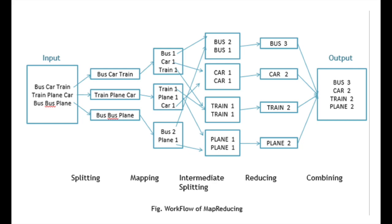The next step is to count total buses, total cars, total planes in a single box. Box 1 shows bus 2 and bus 1; box 2 shows car 1 and car 1; box 3 shows train 1 and train 1; box 4 shows plane 1 and plane 1. Counting all: first phase has 3 buses, second phase 2 cars, third phase 2 trains, and fourth phase 2 planes. The output is 3 buses, 2 trains, 2 cars, and 2 planes. The steps are: splitting, mapping, intermediate splitting, reducing, and combining.